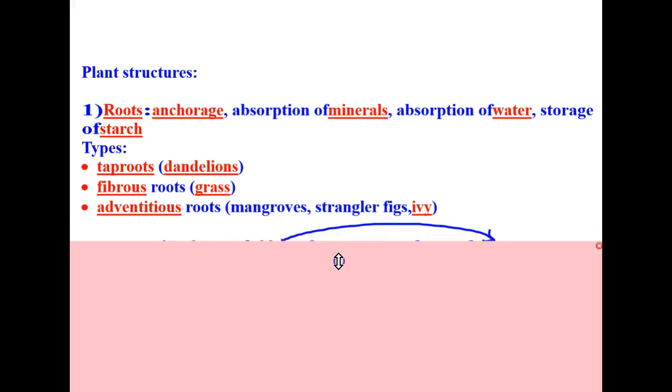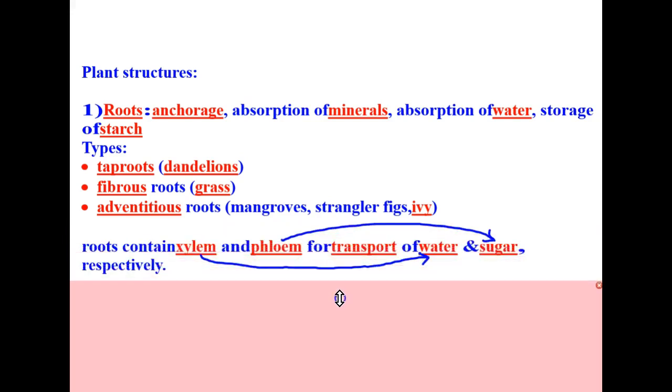Roots contain xylem and phloem for the transport of water and sugar, respectively. So that means that xylem is responsible for the transport of water, and phloem is responsible for the transport of sugar.